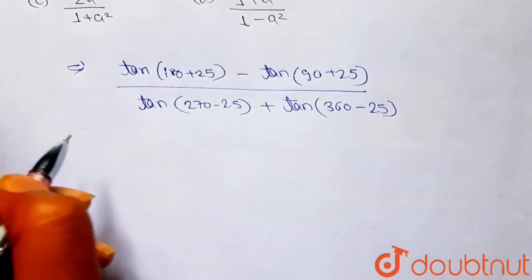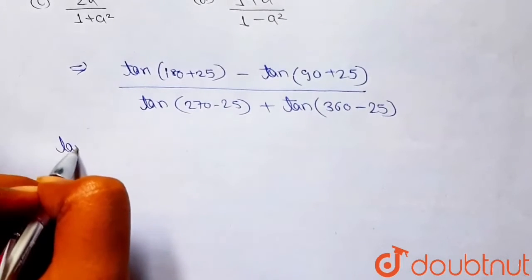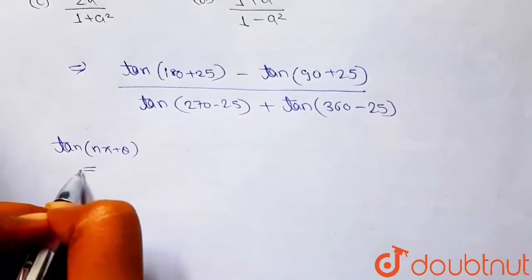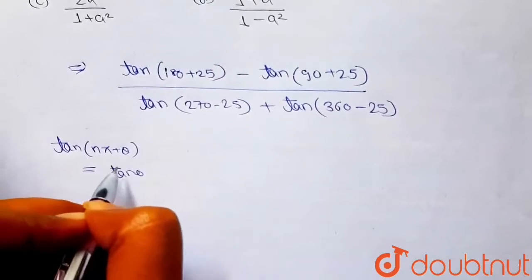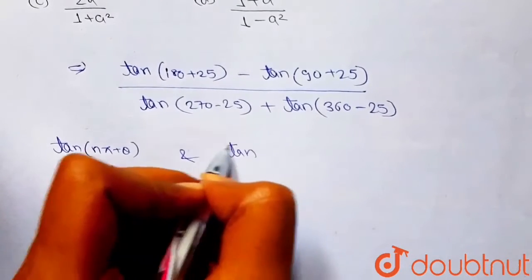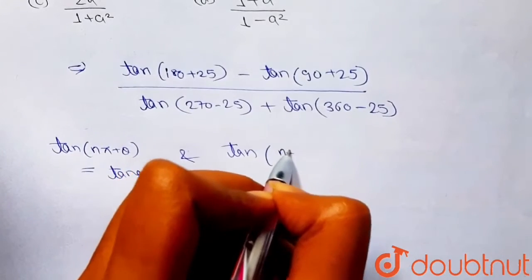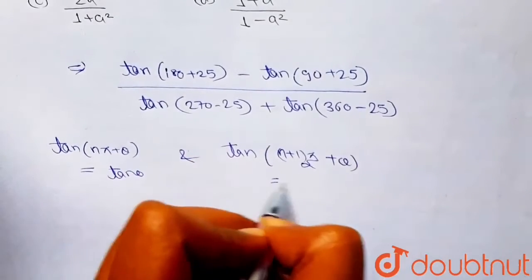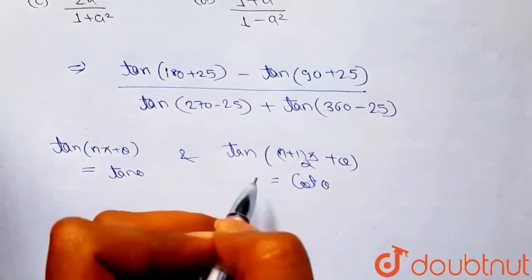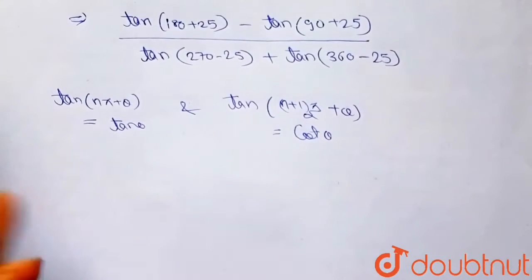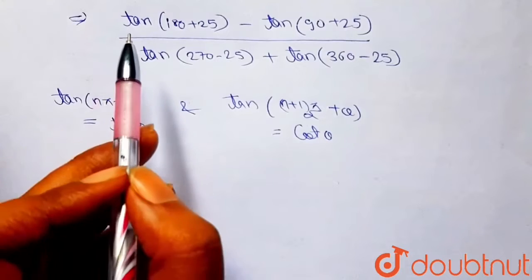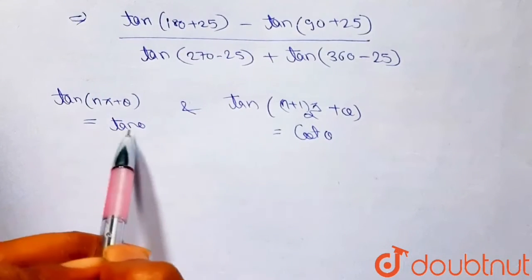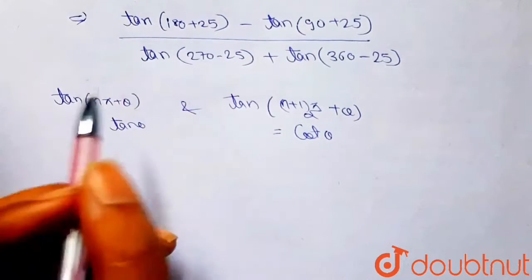You must know that tan(nπ + θ) is always equal to tan(θ). And if you have tan((n+1)π/2 + θ), that will be equal to cot(θ). So tan(180° + 25°) will be equal to tan(25°).